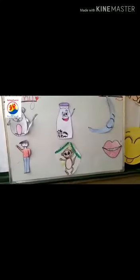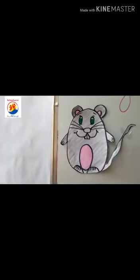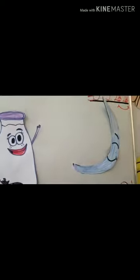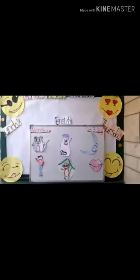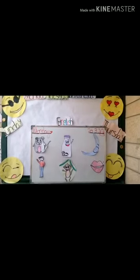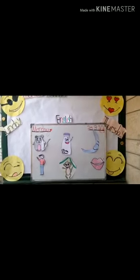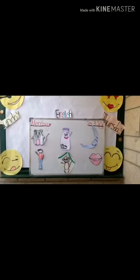Let's show all the things that start with the letter M. Mouse — ma, ma, mouse. Milk — ma, ma, milk. Moon — ma, ma, moon. Man — ma, ma, man. Monkey — ma, ma, monkey. Mouth — ma, ma, mouth. We learned the new letter — this letter is letter M. We know how to write letter M, and we know all the things that start with the letter M.